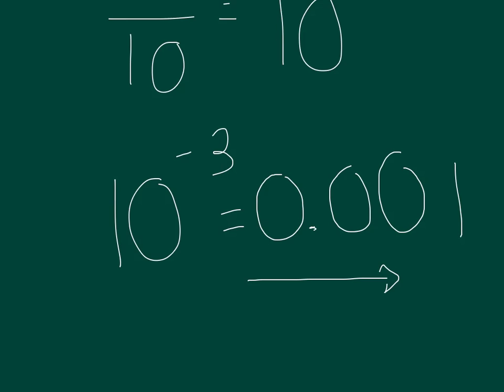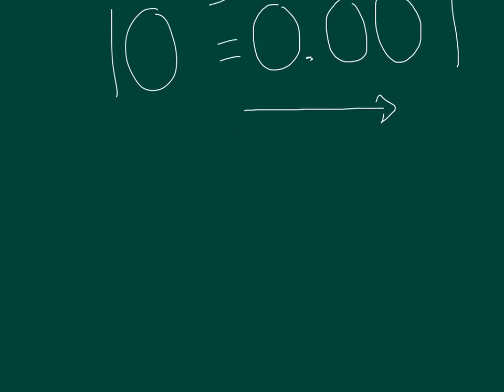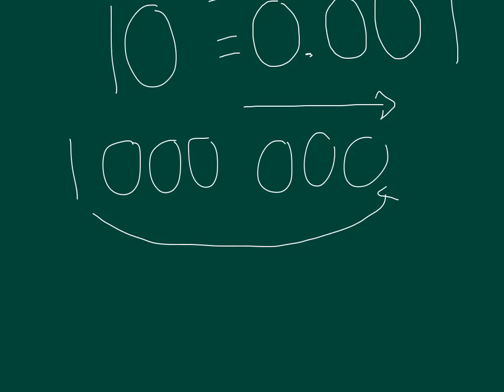You can also do it the other way. If you're given the number, let's say you're given the number one millionths. Well, how many zeros does a million have? The regular number million. We know it has six zeros, right? One million. But because we're talking about one millionths, the one is actually going to be on this side, and it's a smaller number, and we place the decimal. So, it really will look like this. One millionths.